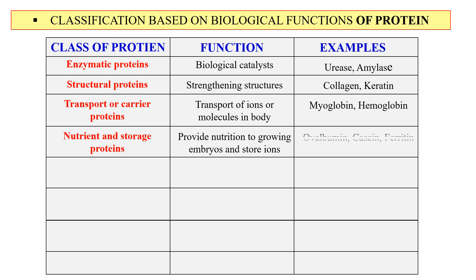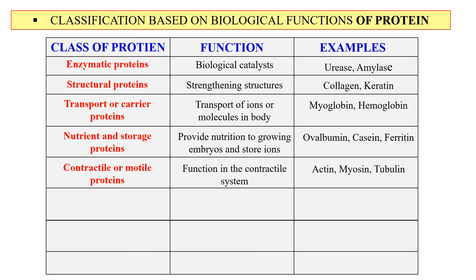Next, nutrient and storage proteins — these are proteins that provide nutrition to growing embryos and also store ions. Examples include ovalbumin, casein, and ferritin. Next, contractile or motile proteins — these function as contractile systems and help in movement. Examples include actin, myosin, and tubulin.